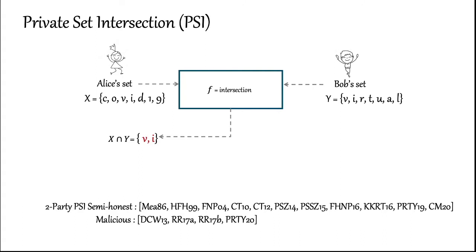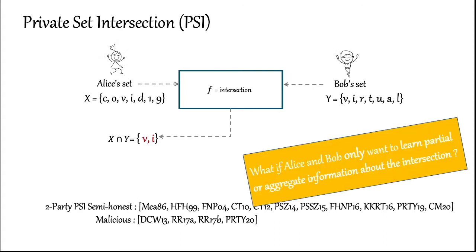In recent years, there has been much interest and progress in making PSI practically very fast and efficient, in both the semi-honest and malicious setting. In PSI, the output reveals the entire contents of the intersection. But what if Alice only wants to learn some partial information about the intersection? These protocols do not extend immediately.